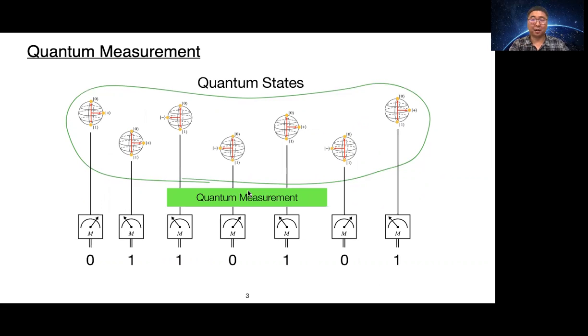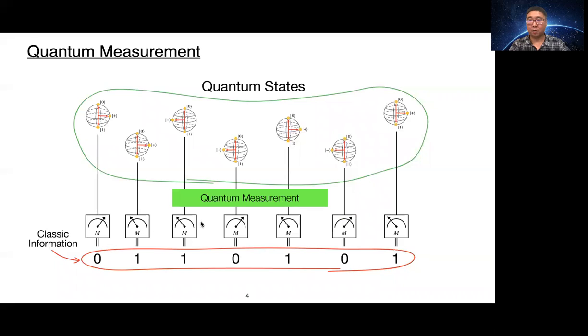There is a process of obtaining information about the physical state using a measurement device. Through quantum measurement, we can have classical information about the states.